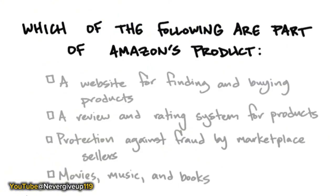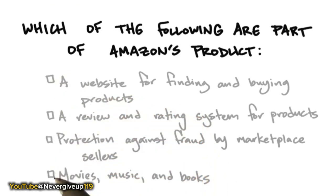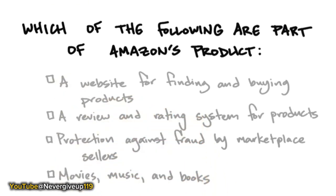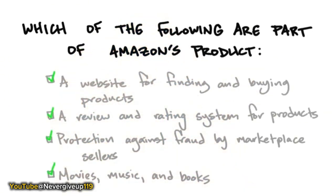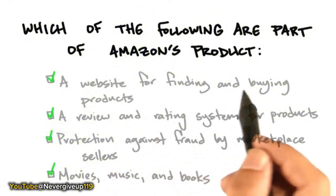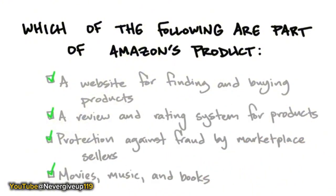Looking at the Amazon website for books — not Kindle or AWS, but just their traditional book-selling website — all of the following are part of their product: the website for allowing users to find and buy products; a review and rating system for products; protection against fraud for marketplace sellers; and the content itself — movies, books, music, etc. The sum of all of these makes up Amazon's complete product.